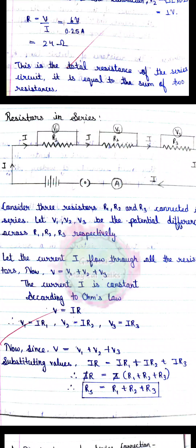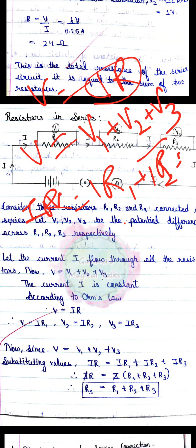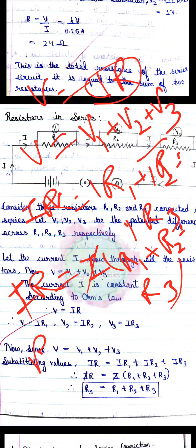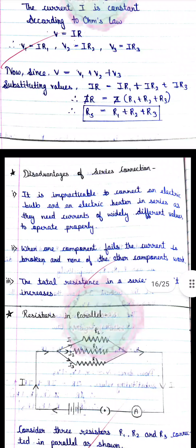Series combination में R1, R2, R3 resistances series में लगाए हैं। Current की value हर resistor के across I है, और V = IR। Total potential V किसके equal होगा — sum of potentials: V = V1 + V2 + V3। यहाँ से IR = IR1 + IR2 + IR3। I को cancel करने पर R = R1 + R2 + R3 — यह है resistances in series।